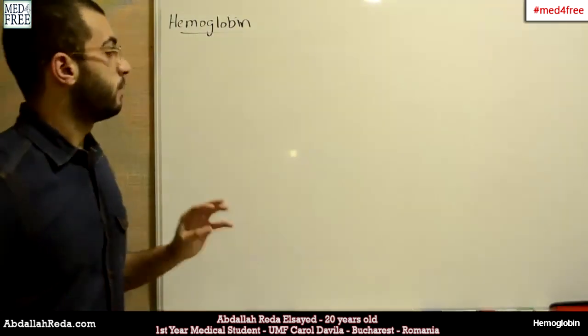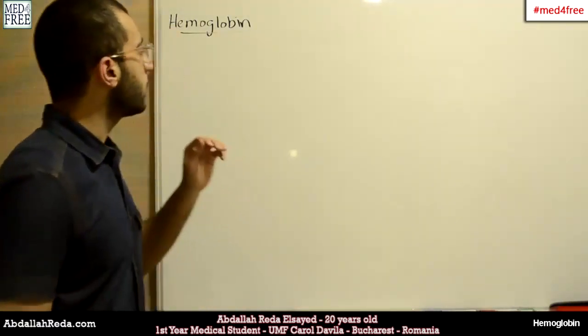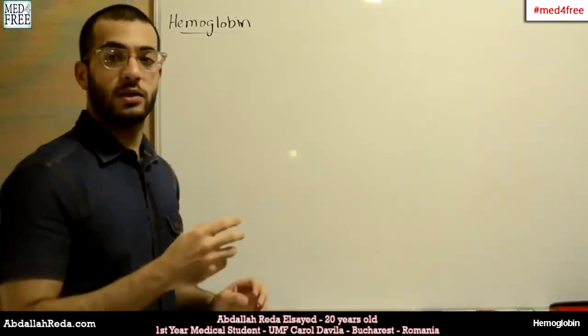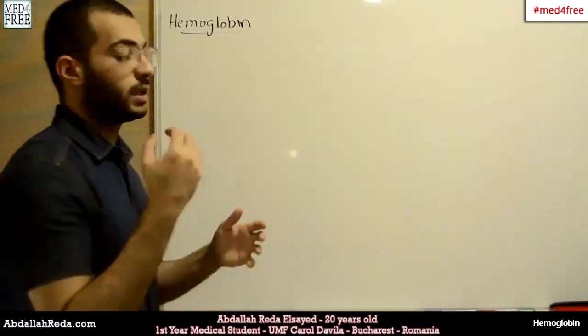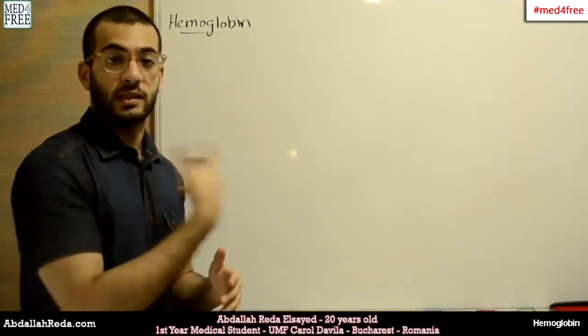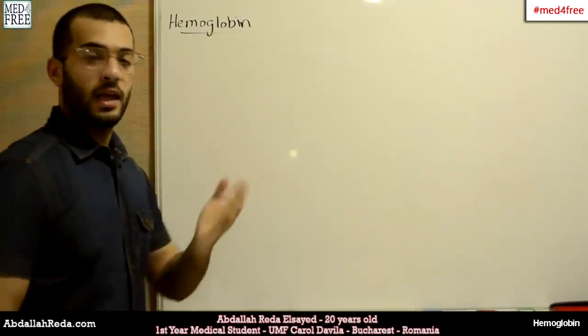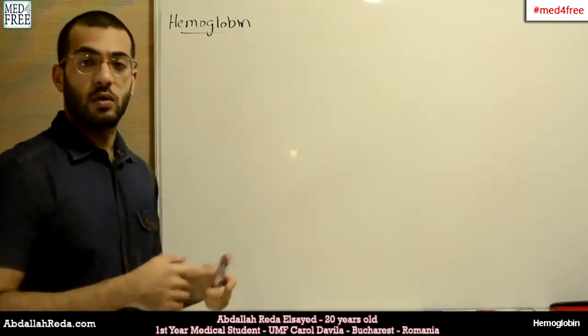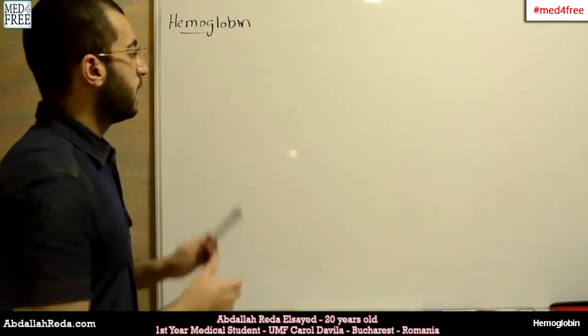Today we're going to talk about hemoglobin, a very important protein found inside red blood cells. It gives red blood cells their red color and is essential for binding oxygen. Oxygen binds to hemoglobin and is transported to cells that need it, where it is exchanged with carbon dioxide. The carbon dioxide then goes to the lungs, is exhaled, and the red blood cells bind oxygen once again. This cycle repeats continuously, making hemoglobin a very important protein inside our bodies.